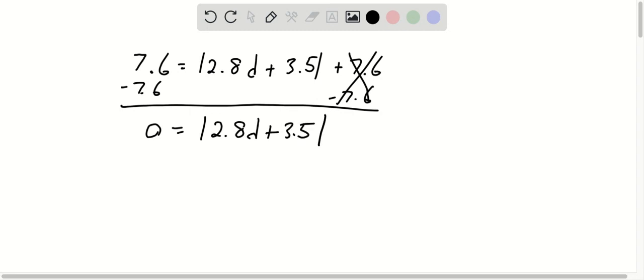Now, because it's equal to zero, 2.8d plus 3.5 is one solution. We'll take it, just the inside of the absolute value, and solve it for d.